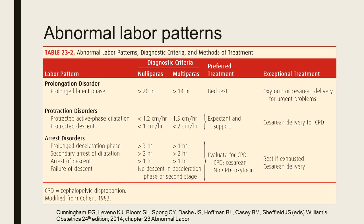There are three basic abnormal labor patterns: prolongation disorder, protraction disorder, and arrest disorder. Prolongation disorder is an abnormal labor pattern during the latent phase. Under prolongation disorder, we have only one type — prolonged latent phase. The diagnostic criterion is more than 20 hours for nulliparas and more than 14 hours for multiparas.